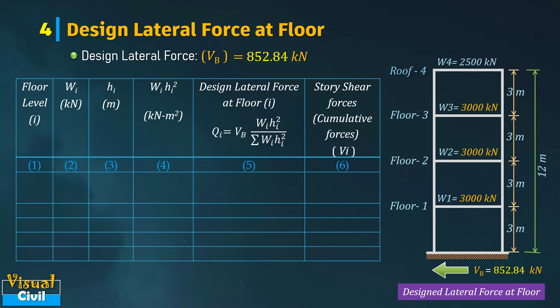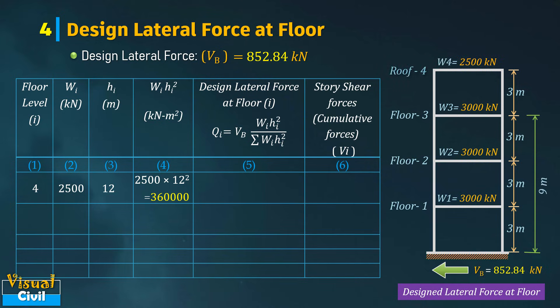Let us start from the roof, that is floor level 4. The seismic weight Wi at this level is 2500 kilo-newton. The height Hi of the roof level from the base is 12 meters. The value of Wi × Hi² is therefore equal to 360,000.